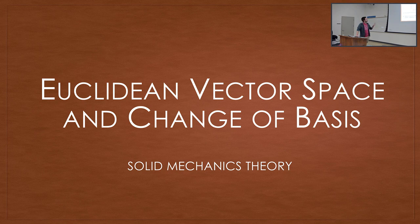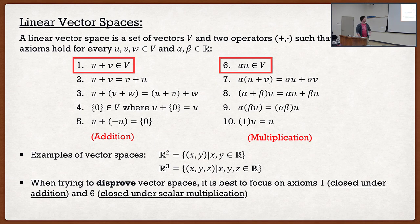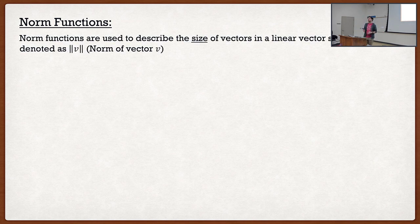So let's go into linear vector spaces. For our vector space to be considered a linear vector space, it has to hold certain axioms — we already went through these last lecture. Now, after we have a linear vector space, we can do certain operations within it. We're going to look at three specific operations, and the first one is something called a norm function. You may not have heard of a norm function, but you may have heard of its equivalent — the magnitude.